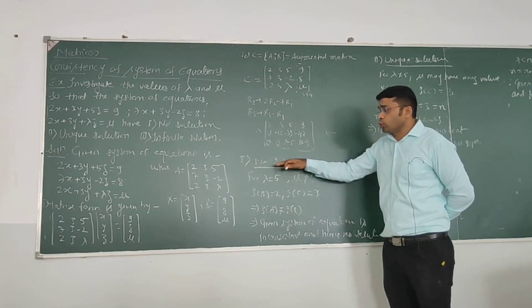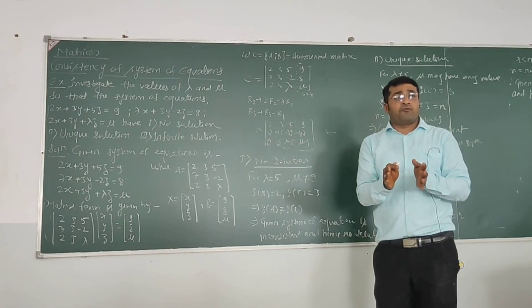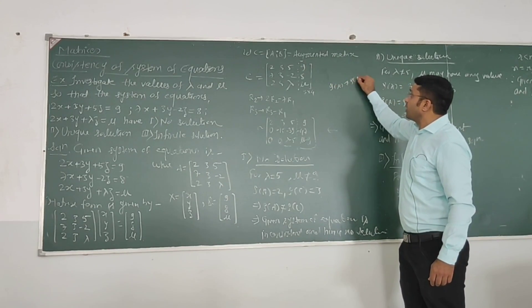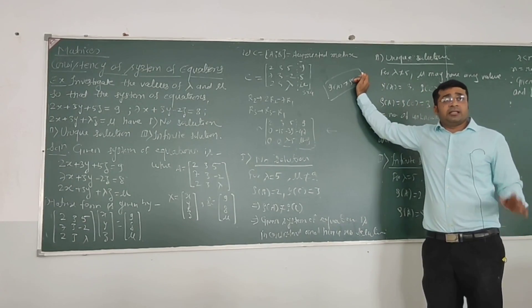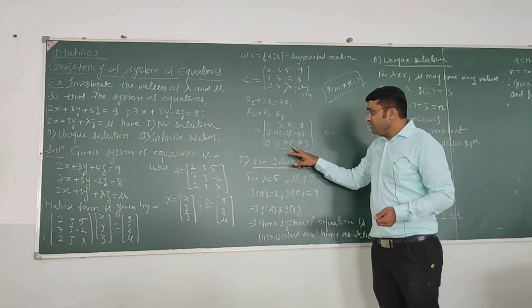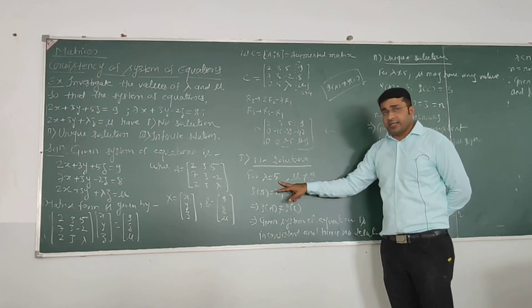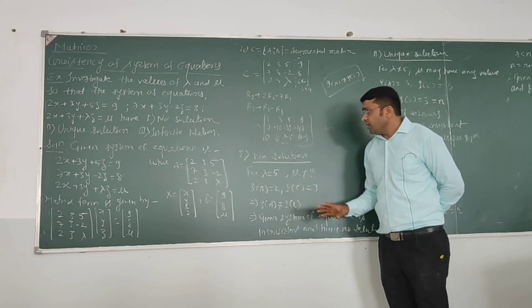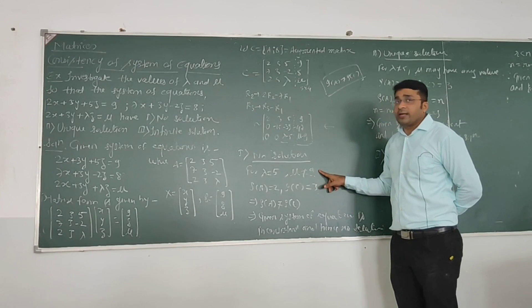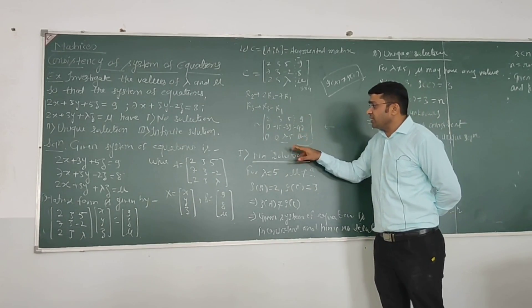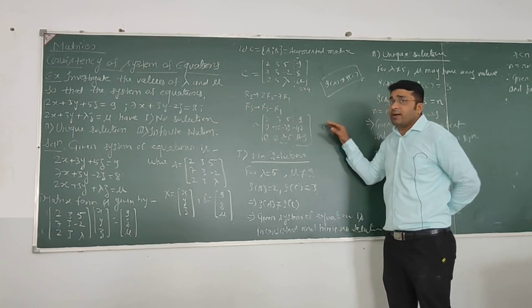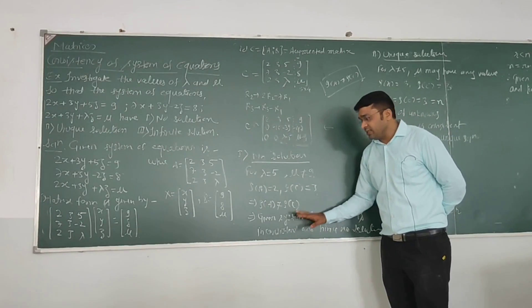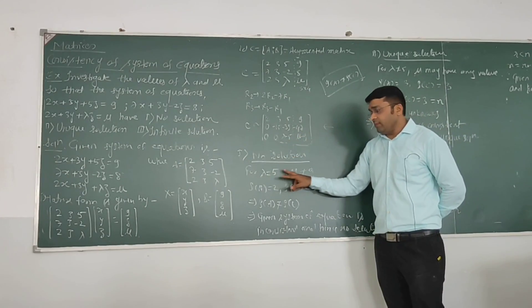Now with the upper triangular form, we decide for what values of lambda and mu we have no solution. The condition for no solution is that rank of the coefficient matrix A should not equal the rank of the augmented matrix C. For lambda equals 5, rank of A becomes 2 because the number of non-zero rows is 2. For mu not equals to 9, the quantity (mu minus 9) is non-zero, making rank of C equal to 3. Since rank A (2) ≠ rank C (3), the system is inconsistent and has no solution.